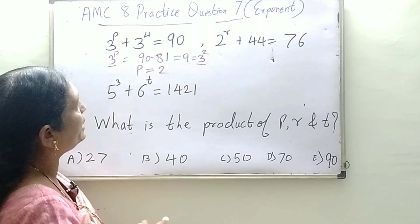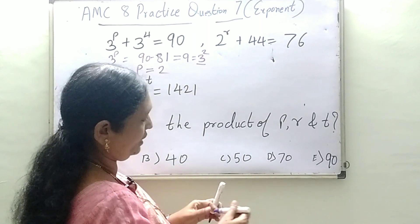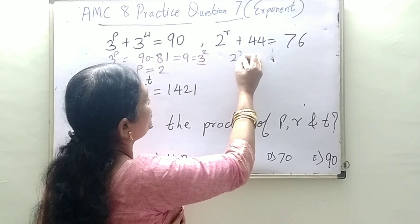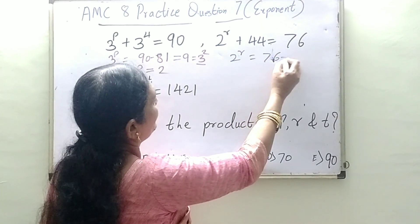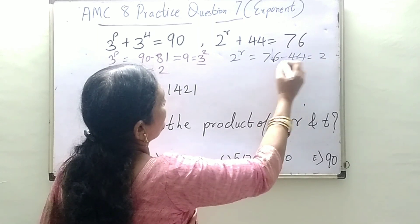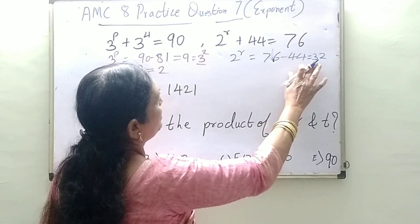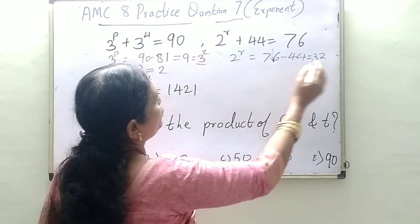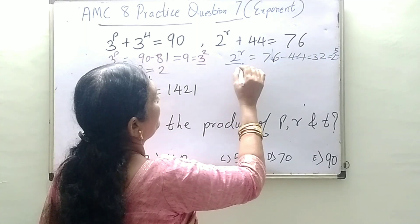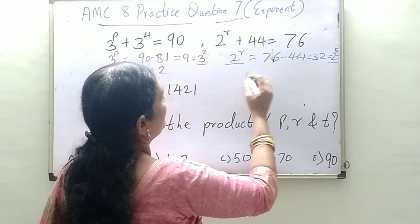Now 2 raise to r plus 44 is equal to 76, so we shift this 44 here. 2 raise to r is equal to 76 minus 44, which is 32. And 32 is the fifth power of 2, which is 2 to the power 5. So you get r is equal to 5.